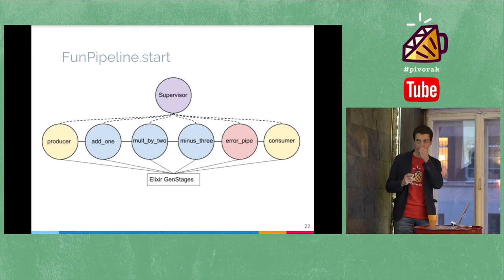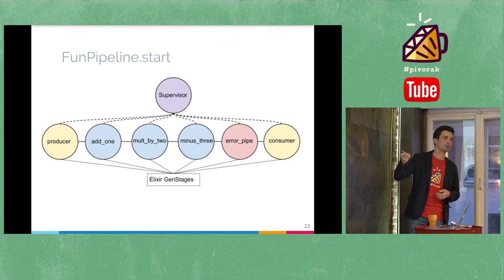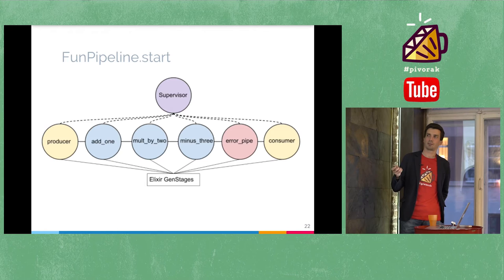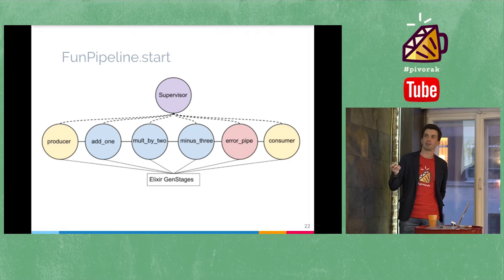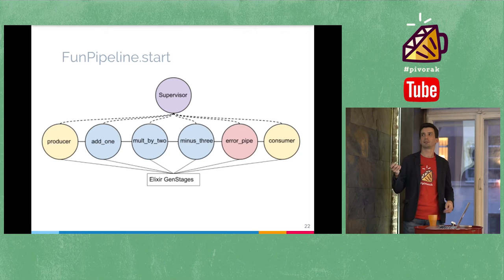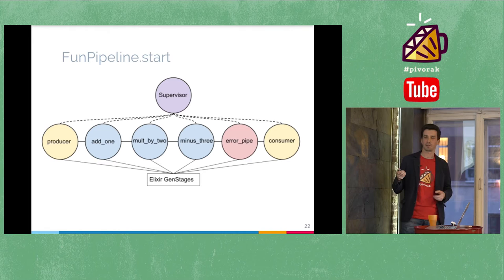This slide demonstrates what happens when you start the pipeline. To start it, you just call the start method on your defined module. First, each of your functions is placed into a separate GenStage — a separate process — and becomes a separate component. FlowEx also adds an error pipe to handle errors, and adds a producer pipe and consumer pipe. Producer and consumer do nothing themselves; they just produce data and consume the result and return it to the client. All these GenStages and components are placed under a supervisor, so when a crash occurs in some process, the supervisor will restart it.